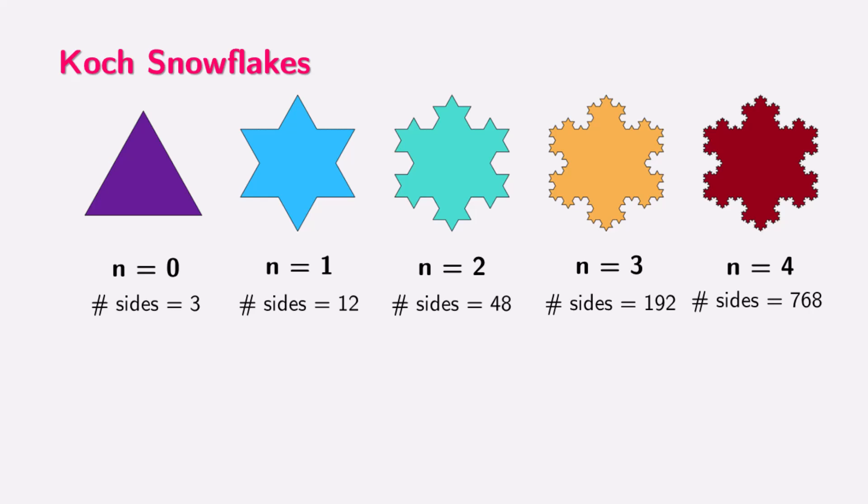In iteration n equals two, the same process is repeated on all 12 sides of the shape. Again, each side is divided into three parts, and an equilateral triangle is added to the middle of each segment, resulting in a total of 48 sides. As we continue this process, the number of sides increases dramatically. At iteration n equals three, we now have 192 sides, and by iteration n equals four, the number of sides grows to 768.